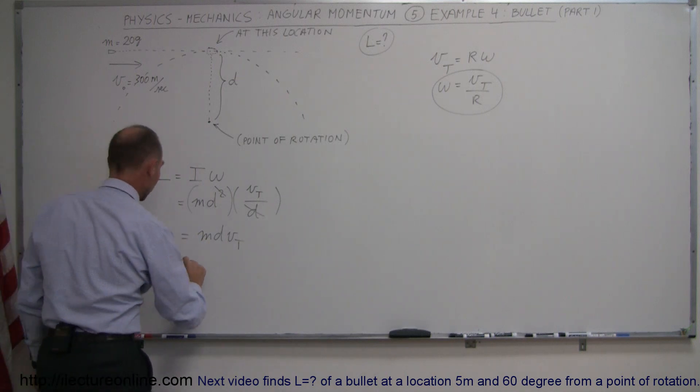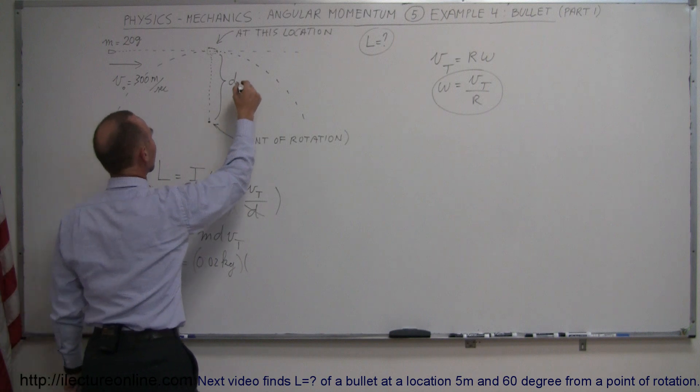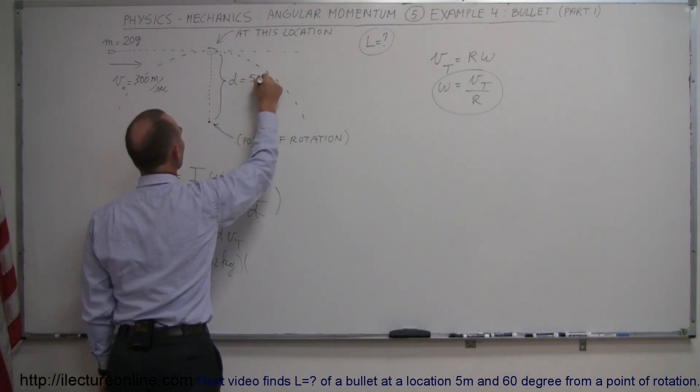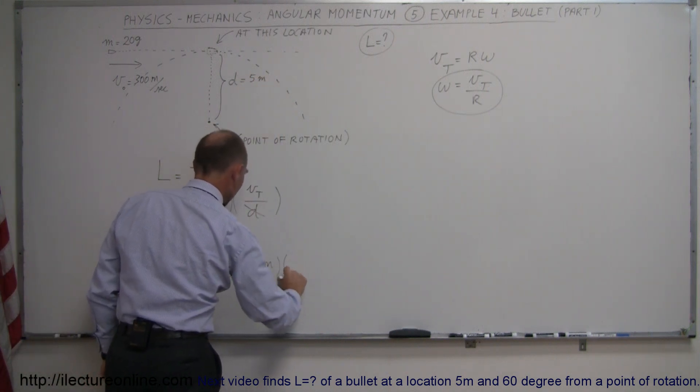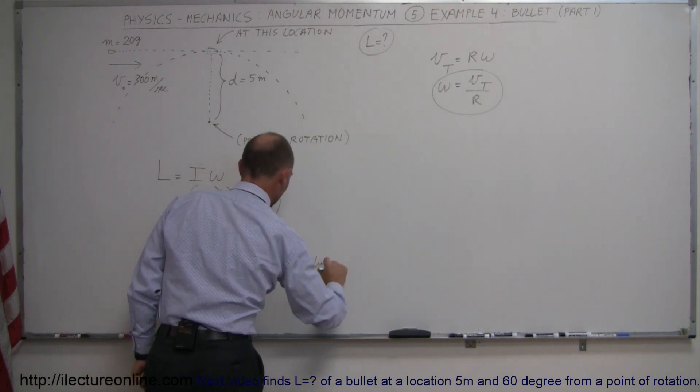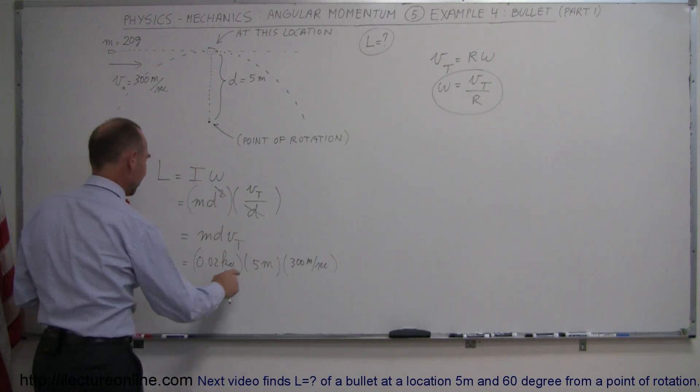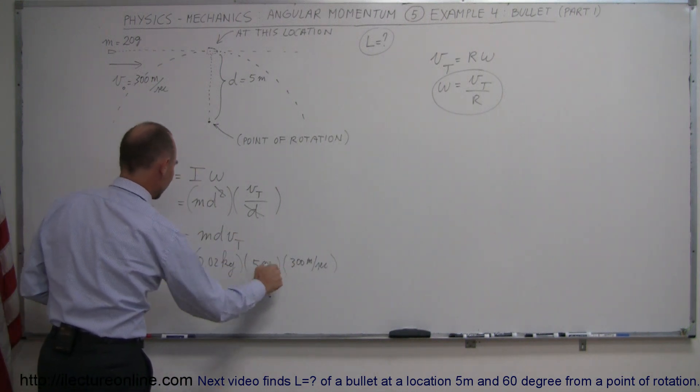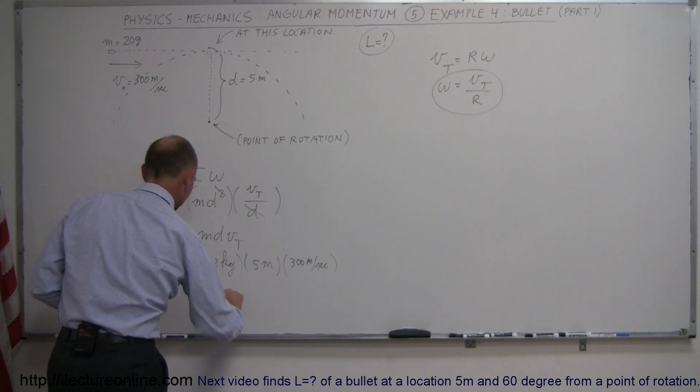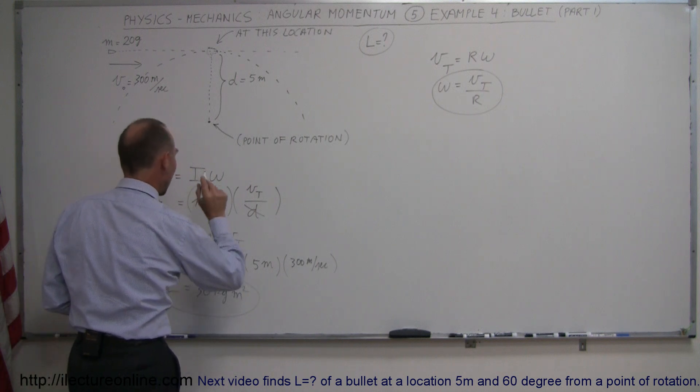If we're now plugging in some numbers, for the mass we get 0.02 kilograms because 20 grams is 2 one-hundredths of a kilogram. The distance, let's say that this is equal to 5 meters. And the tangential velocity we took at 300 meters per second. And that would then be the assumed angular momentum of that bullet at that moment. So let's see here, 5 times this is 0.1 times this, that would be equal to 30 kilograms meters squared. That would be the angular momentum of the bullet at that moment in time.